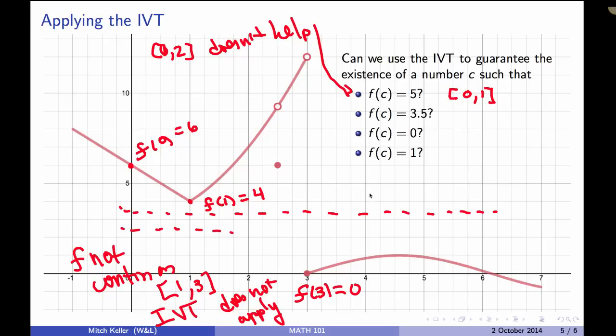And looking at the graph, we can tell there's no c where f(c) equals 3.5 anyway. f(c) equals 0, well, if we came in here and we said f is positive at 5, and f is negative at 7, and f, we already agreed, was continuous on that interval.